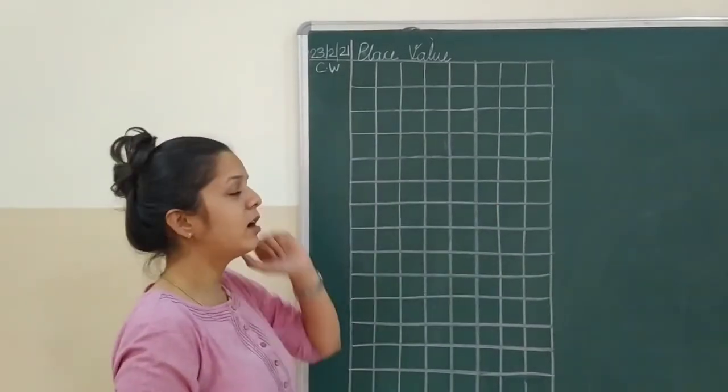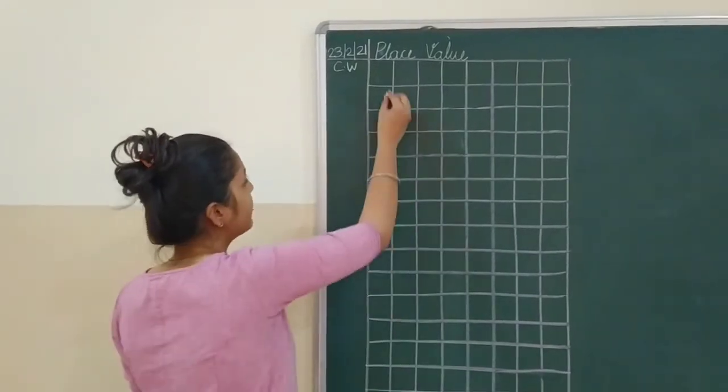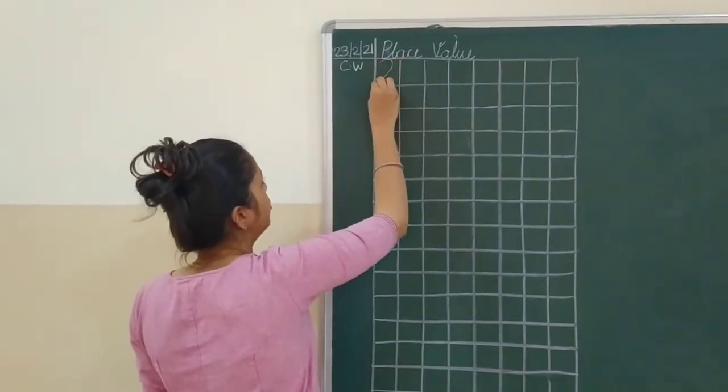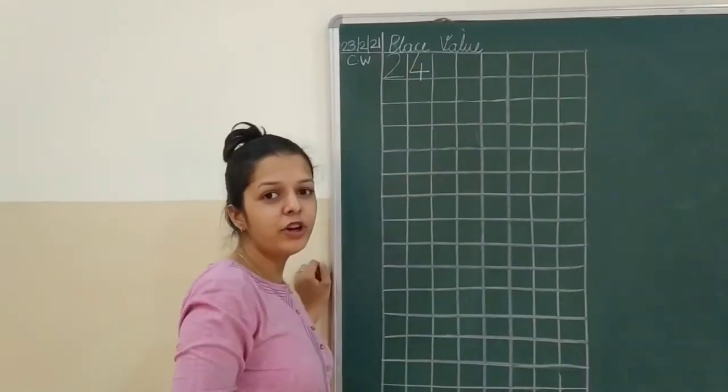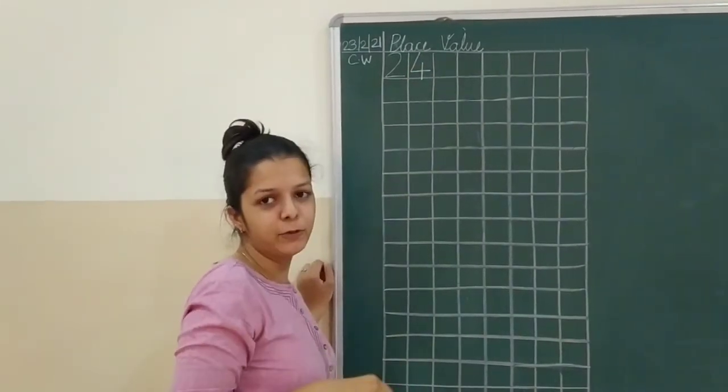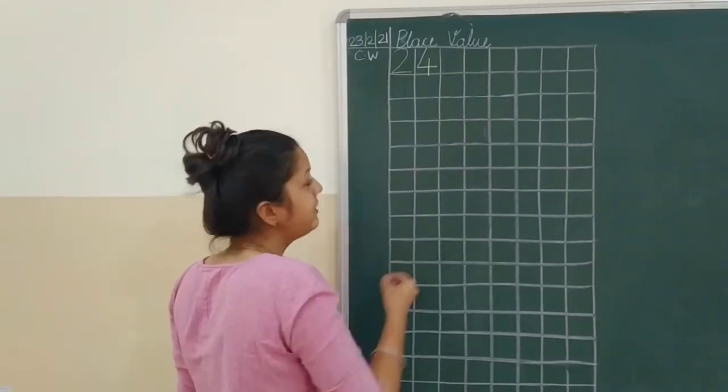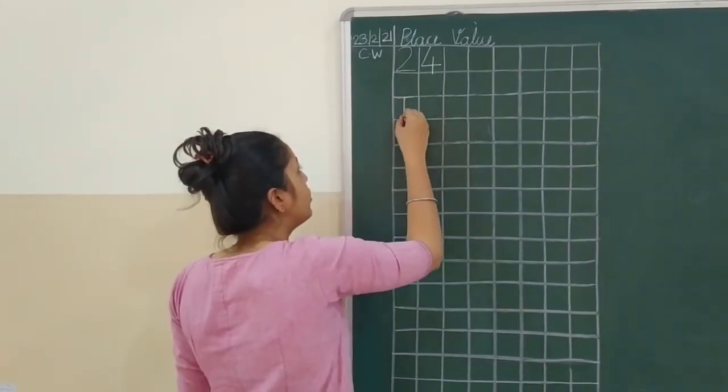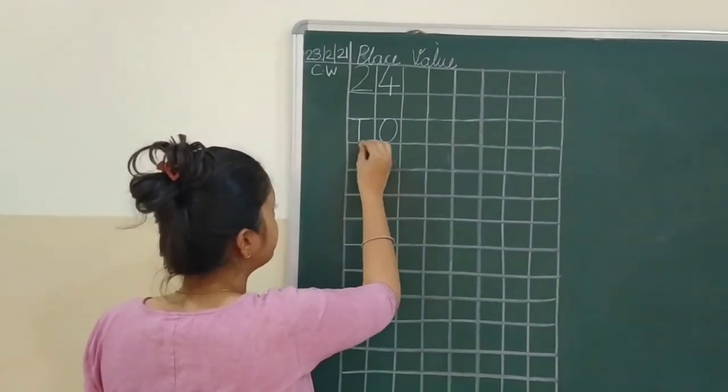Write today's date, CW, and place value. Now, I will write over here 2, 4. What is 2, 4? 24, correct? So, what are we going to write? T, O. So, this is T, O.